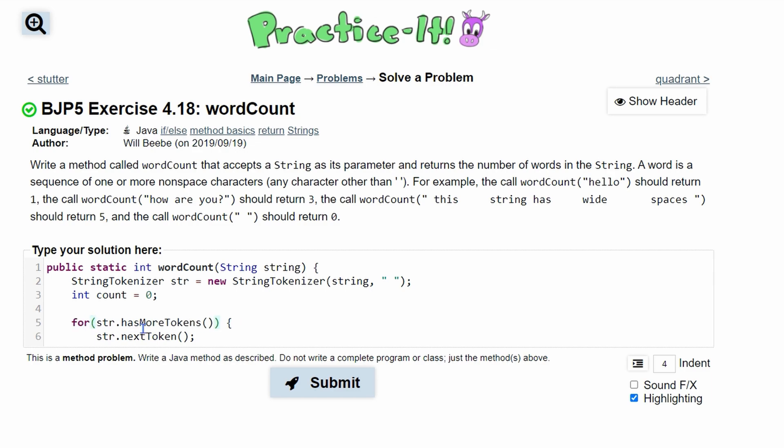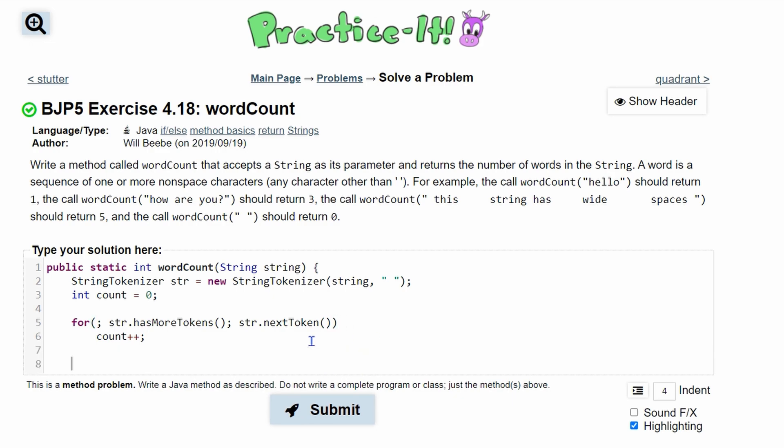This can also be written as a for loop. If we add this, we add this, and then we could put this in the header here. Then inside of here, we're just going to have our count++. We can even get rid of this right here.